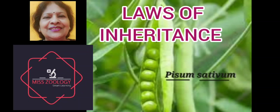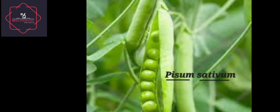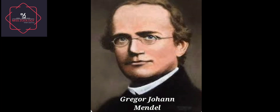Hello viewers, welcome to Misology. In this session, I will explain the laws of inheritance which were put forward by Mendel. Sir Johan Gregor Mendel experimented with pea plants and conducted several experiments between the years 1856 to 1863. He established many of the rules of heredity, which are now referred to as the laws of inheritance.